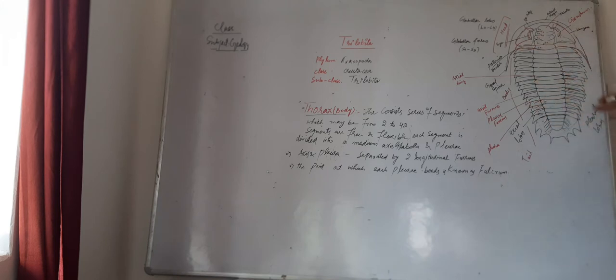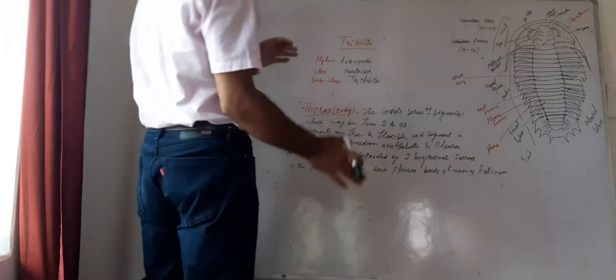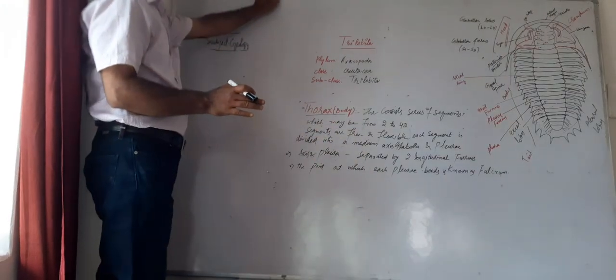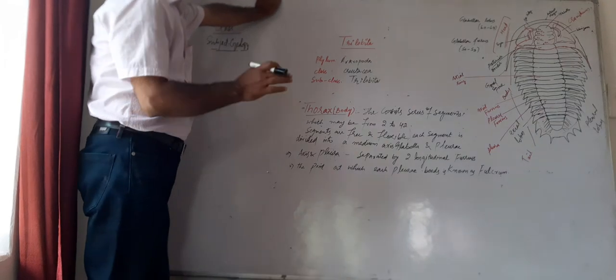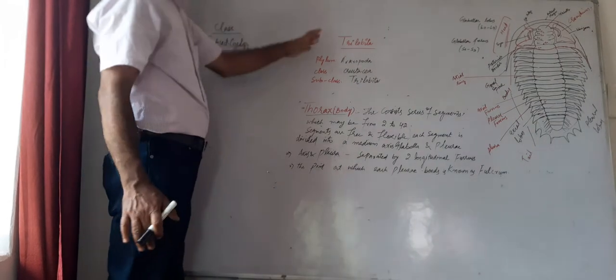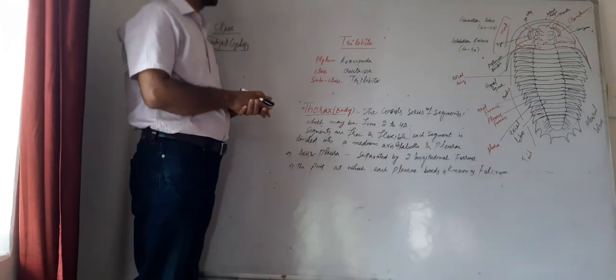This is the tail, and we are discussing today the thorax part. These are the simple points you have to remember regarding the thorax part of the trilobita. I will repeat them, as I have already covered them in the previous class.